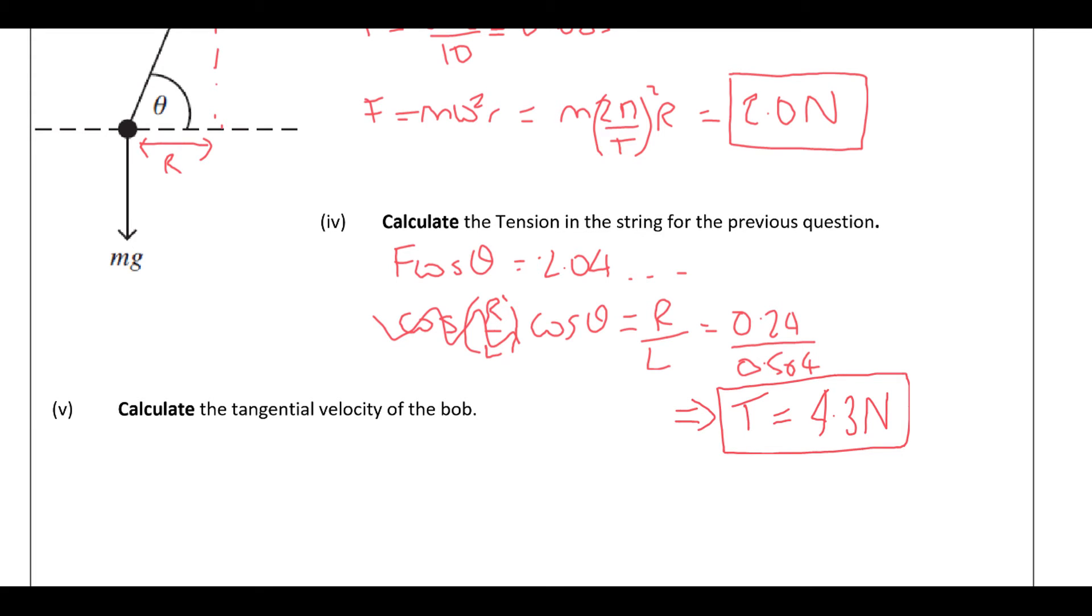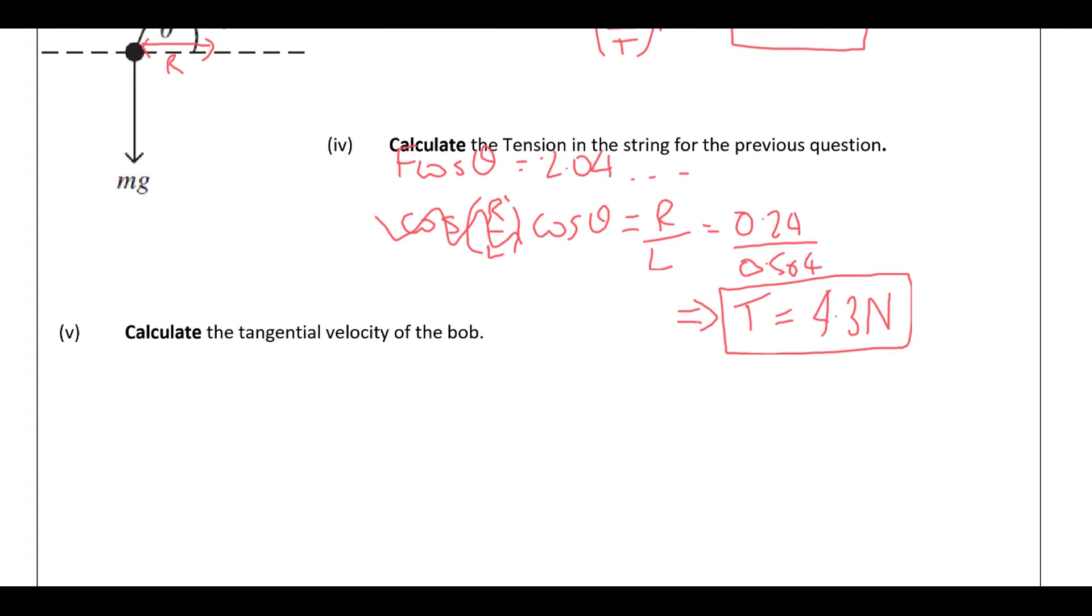So then it wants us to calculate the tangential velocity of the bob. So tangential velocity is r omega. So it would be r 2π over t. So we had a time period of 0.68. So 2π divided by 0.68 times 0.24, that's the radius. Gives us 2.2 meters per second. So two significant figures there. Alright, so let's move on to the final question.